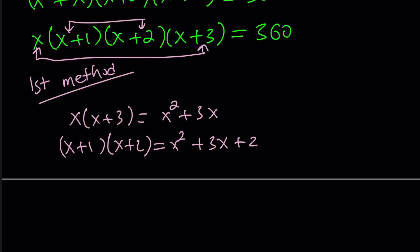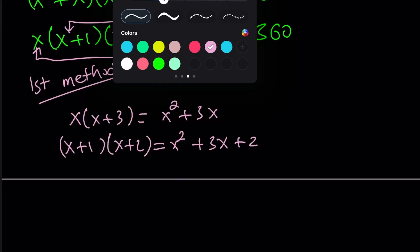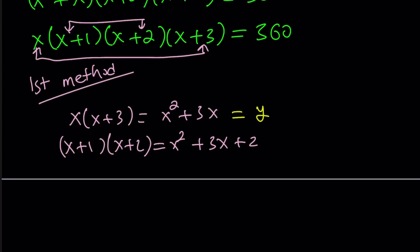Why did I do that? Because when I did, I got the same x term, which is a good thing because now we can use substitution. We can go ahead and call this y, and then this becomes y plus 2. That greatly simplifies the equation.